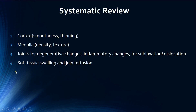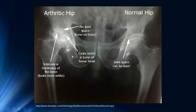Here we have a good example of osteoarthritis of the right hip. We can see loss of the joint space, subchondral sclerosis which appears as increased opacity, and subchondral cysts which appear as lucencies, as we can see here.